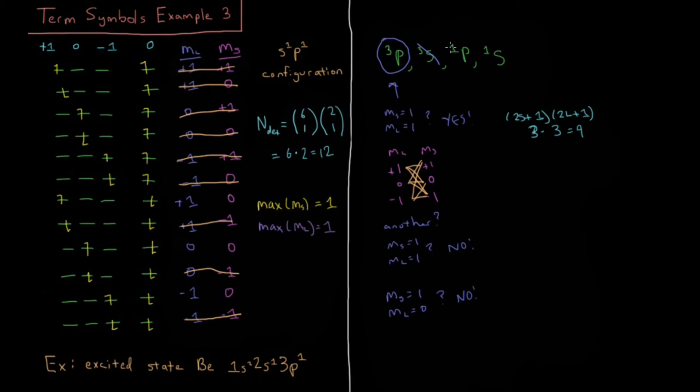Moving down the line for singlet P, what do we need for a singlet P? Do we have m sub s equals 0 for singlet, m sub l equals 1 for P? Do we have a determinant where we have m sub l equals 1 and m sub s equals 0? That's what I see right here, so yes, we do have a singlet P.